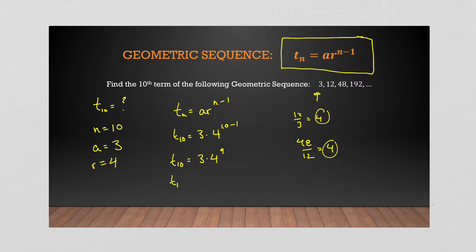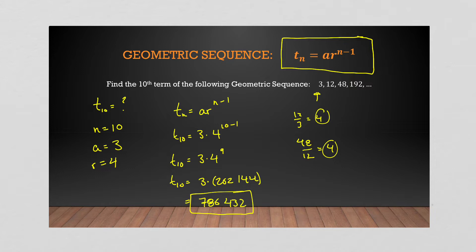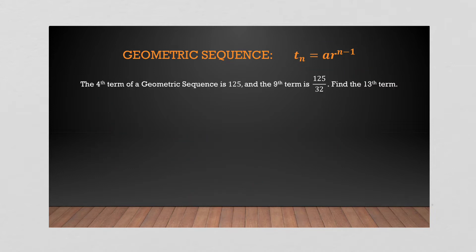So t₁₀ equals 3 times 262,144, which simplifies to 786,432. You can imagine — since it's a common ratio and we're multiplying from term to term, our numbers grow much faster. That's Example 1.